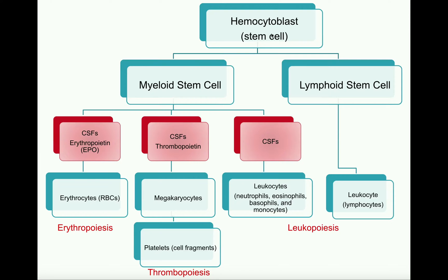Depending on the colony stimulating factors, the hemocytoblast can differentiate into either the myeloid stem cell lineage or the lymphoid stem cell lineage. The myeloid stem cell can differentiate into a red blood cell, a platelet, or specific leukocytes — neutrophils, eosinophils, basophils, and monocytes. To get red blood cells, also called erythrocytes, we need a colony stimulating factor or hormone called erythropoietin or EPO, released by the kidneys, which stimulates erythropoiesis — it drives the myeloid stem cell to differentiate into an erythrocyte.